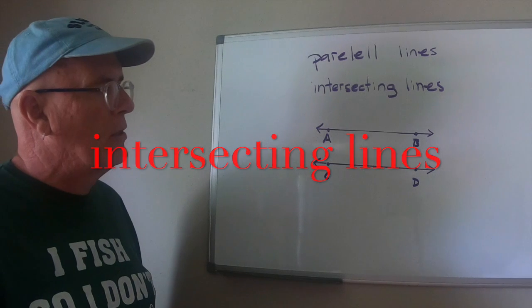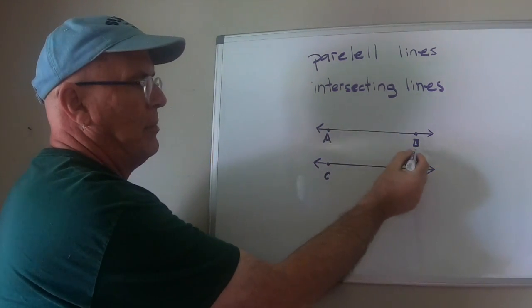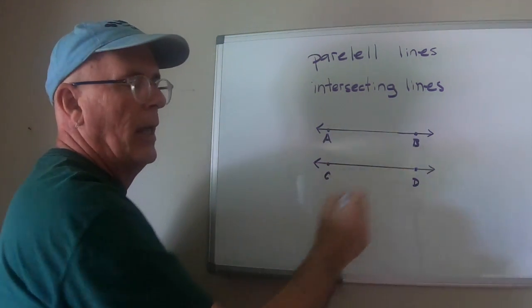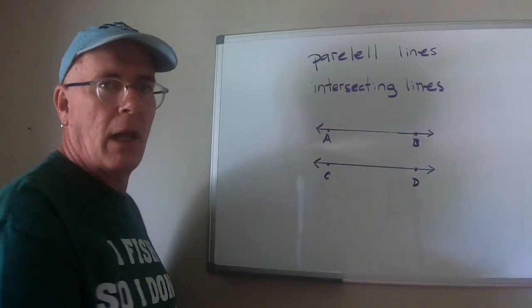Now this is as close as I could get to parallel lines. I measured it. The distance between line AB and line CD is three inches. It's three inches at this point in the lines, it's three inches at this point in the lines.